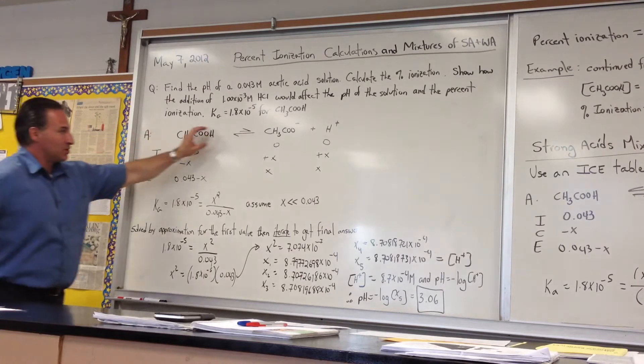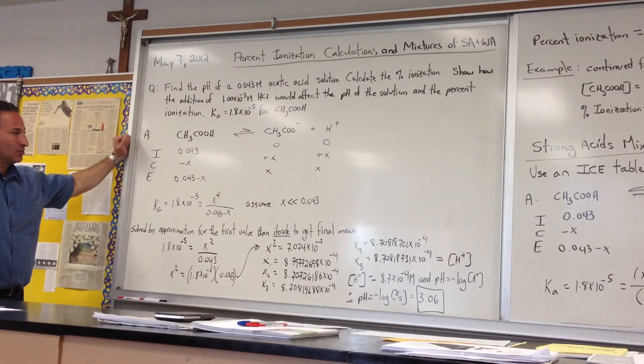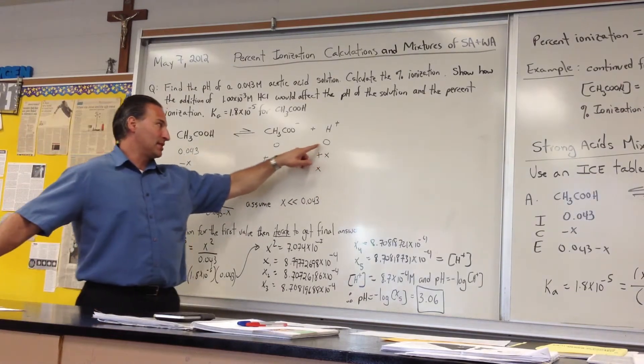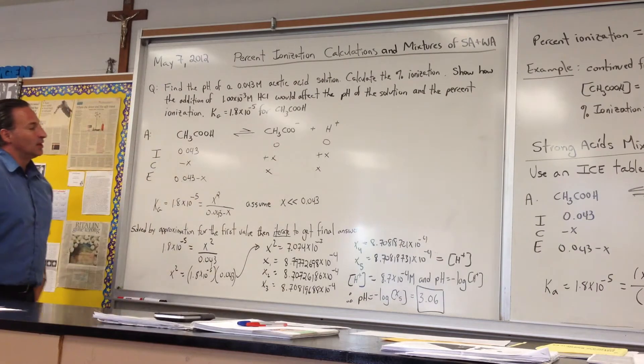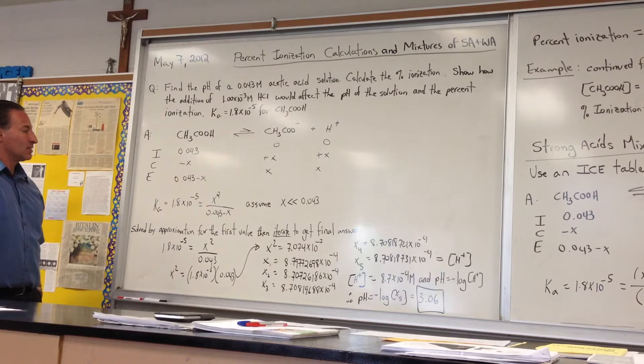First of all, show the chemistry - how the acid dissociates into acetate ion and the proton. Here's your initial concentration, and at the outset, before the acid dissociates, you have zero molar concentration of acetate or hydrogen ions.